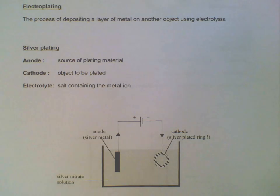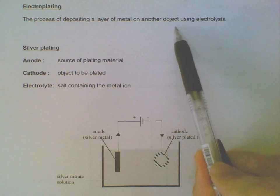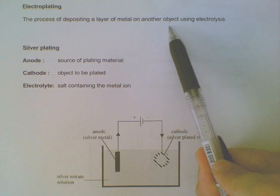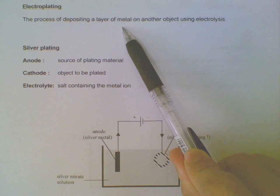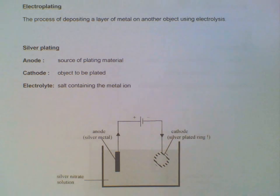In the previous video we talked about electrolysis using active electrodes for purification of copper. Now we'll use another application when we do electroplating, where we want to coat an object with a layer of metal. In this case we will use silver as an example.